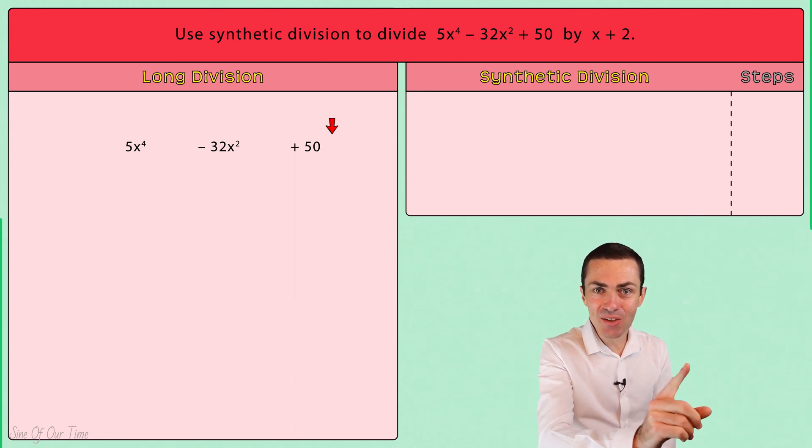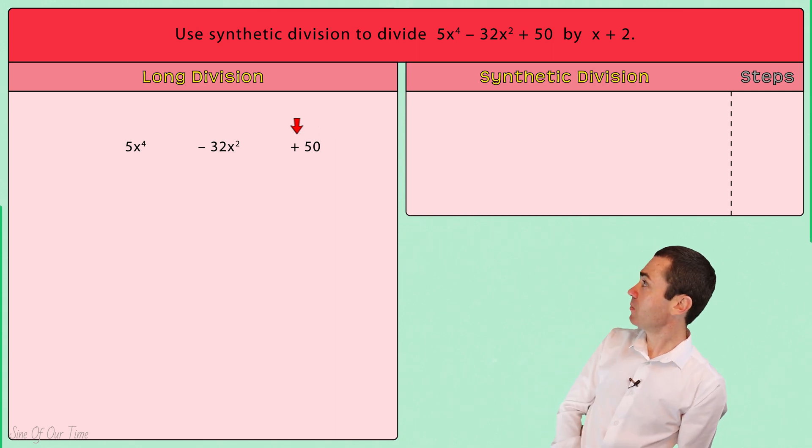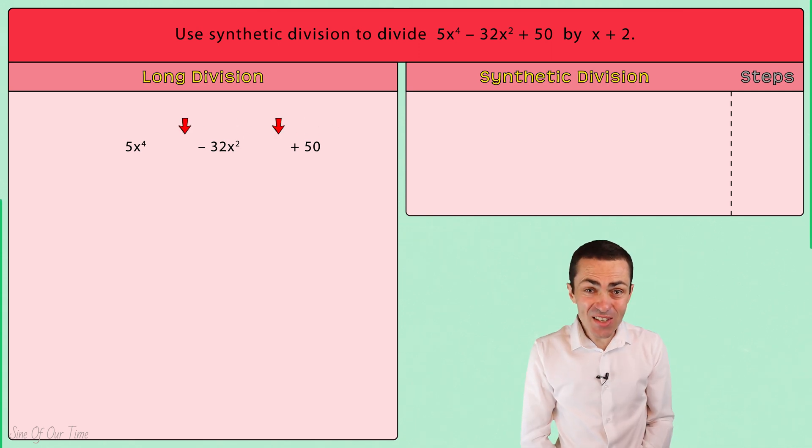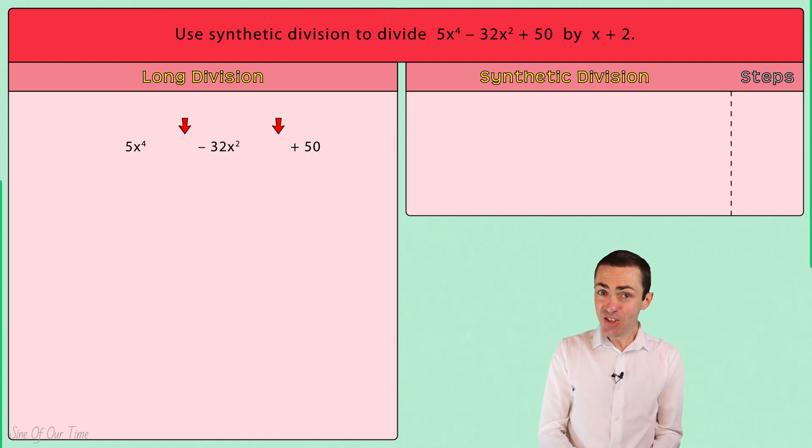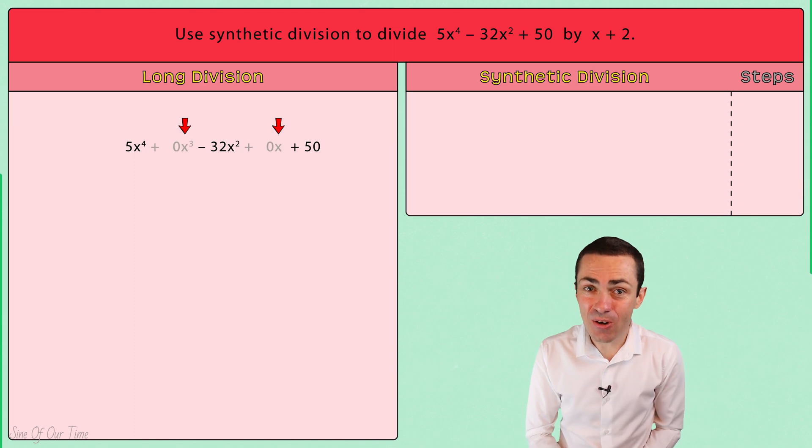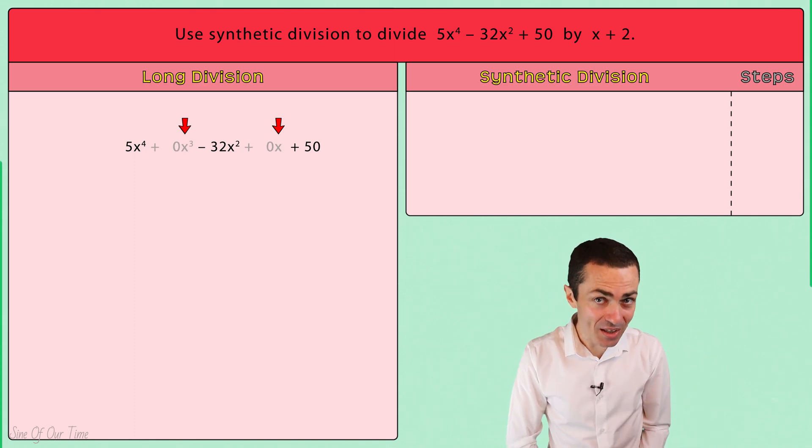Then we scan the dividend to see if there are any missing powers of X. In this example there is a missing X cubed term as well as a missing X term. So let's put placeholders into those positions, which is essential in setting up the synthetic division.